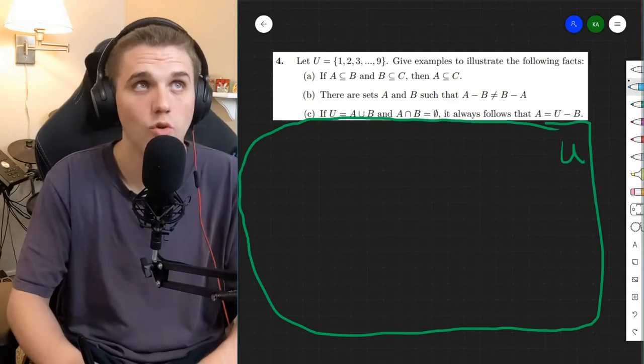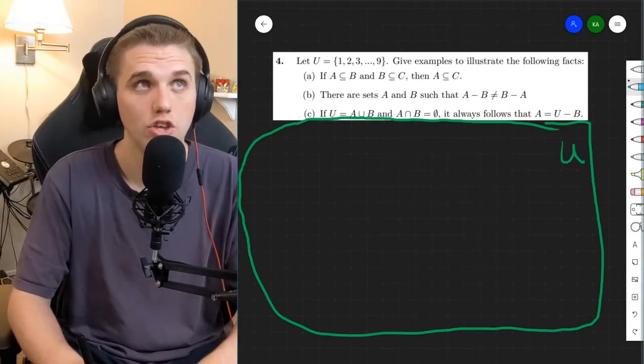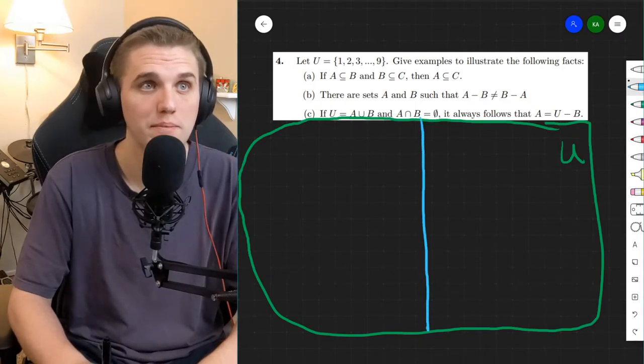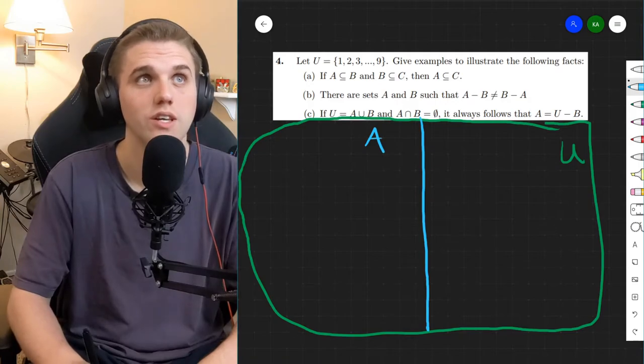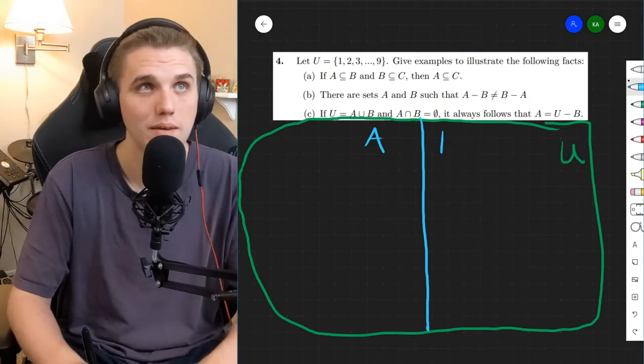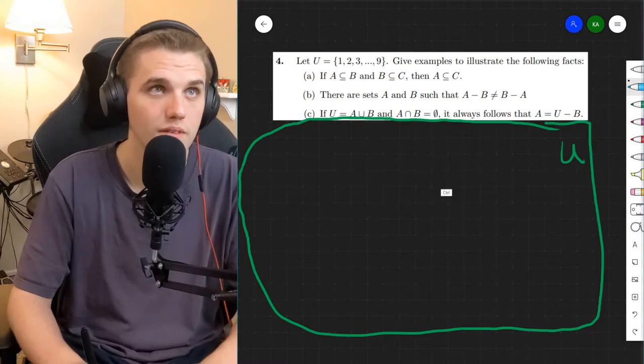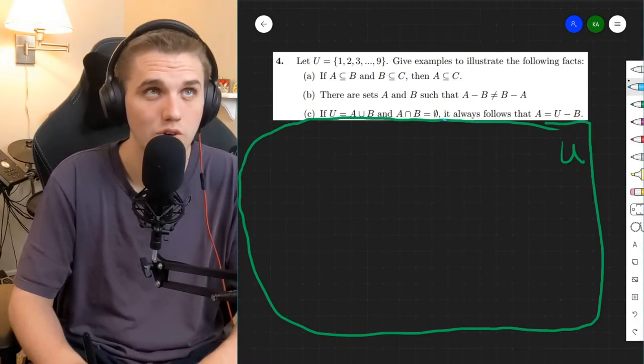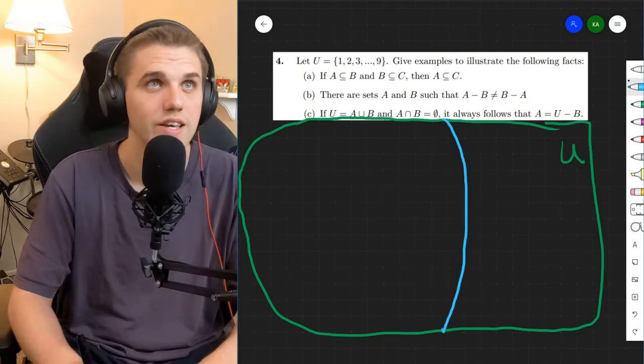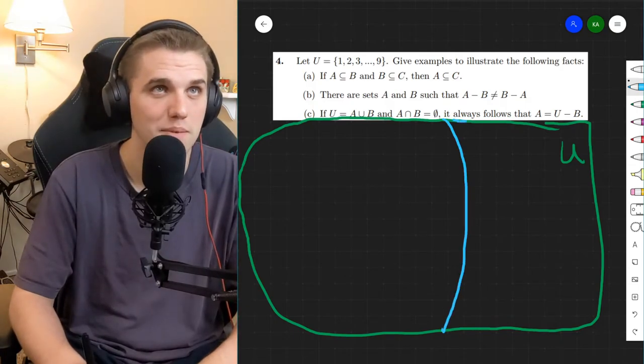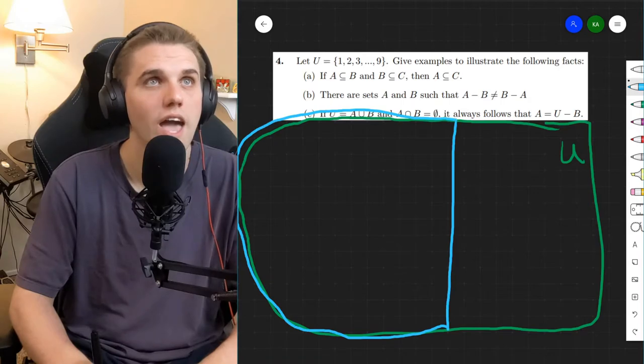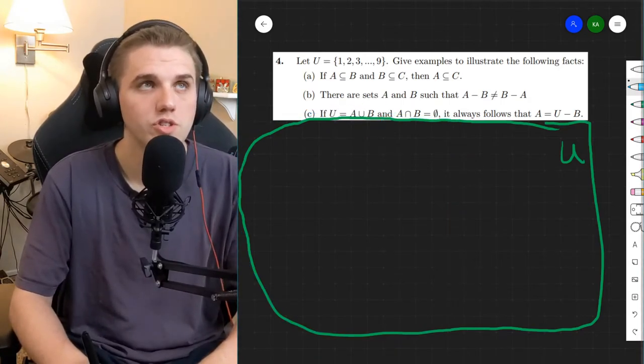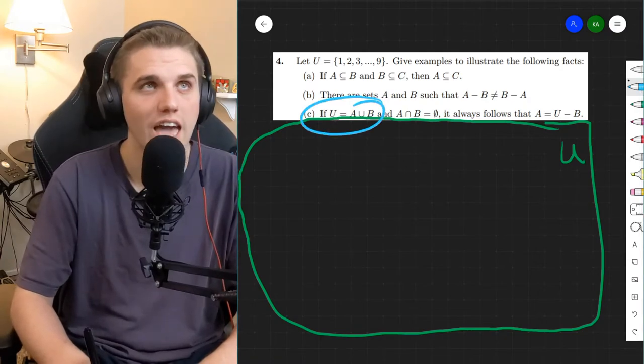Okay, so this says right from the get-go that the universe is A union B. So I can split my universe into two sets, A and B. And they might be... So that means I can write my U as the intersection of A and B.